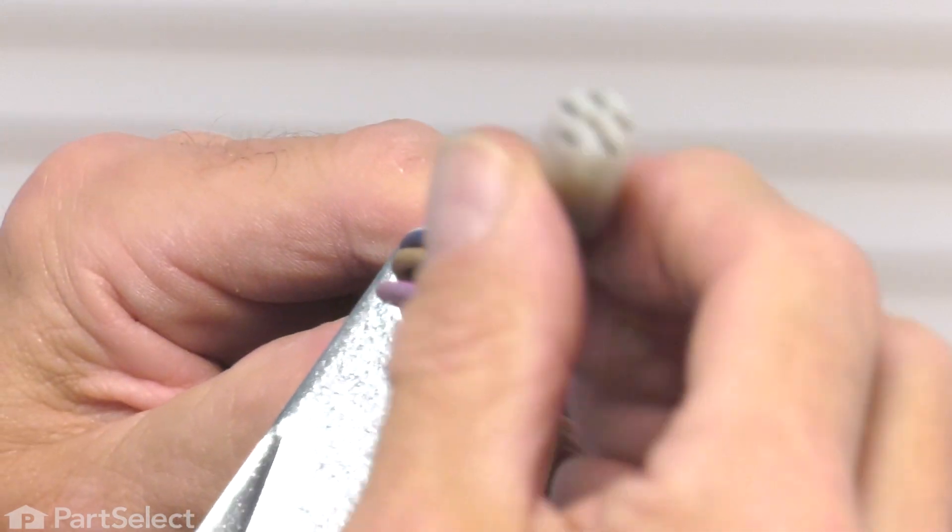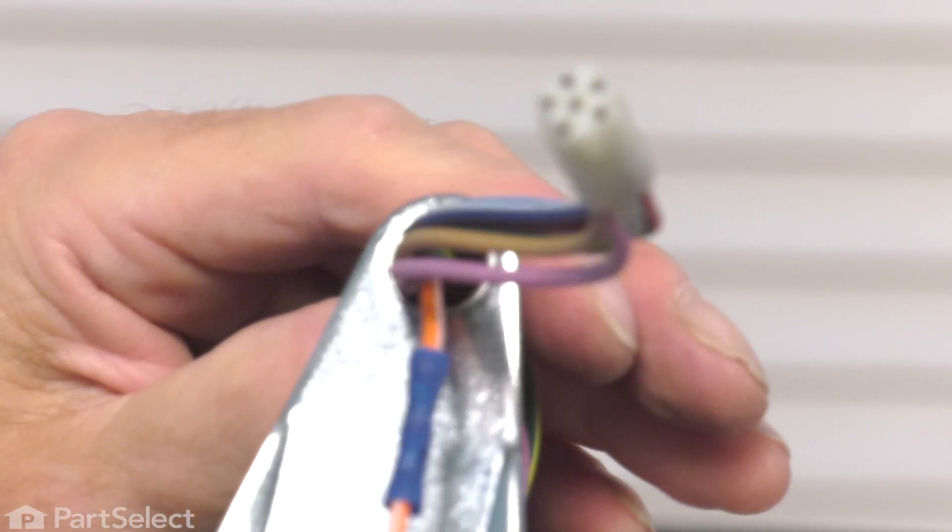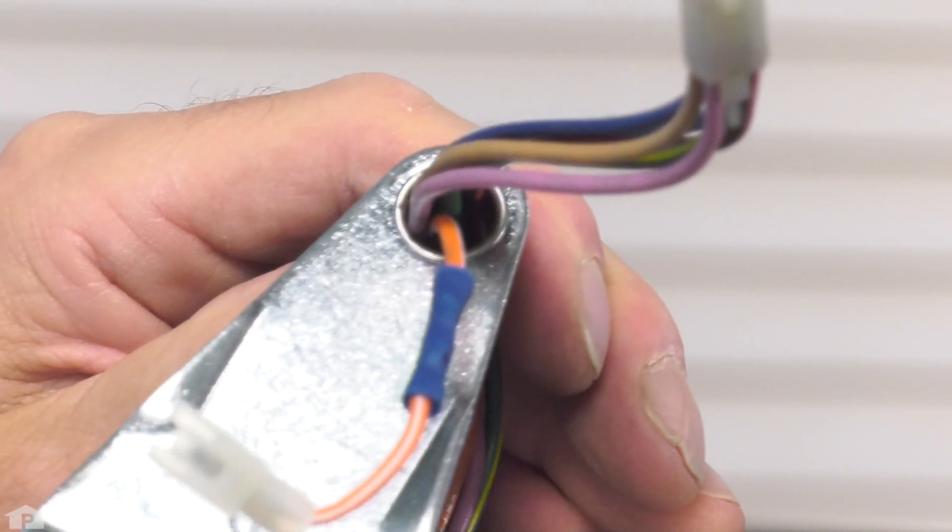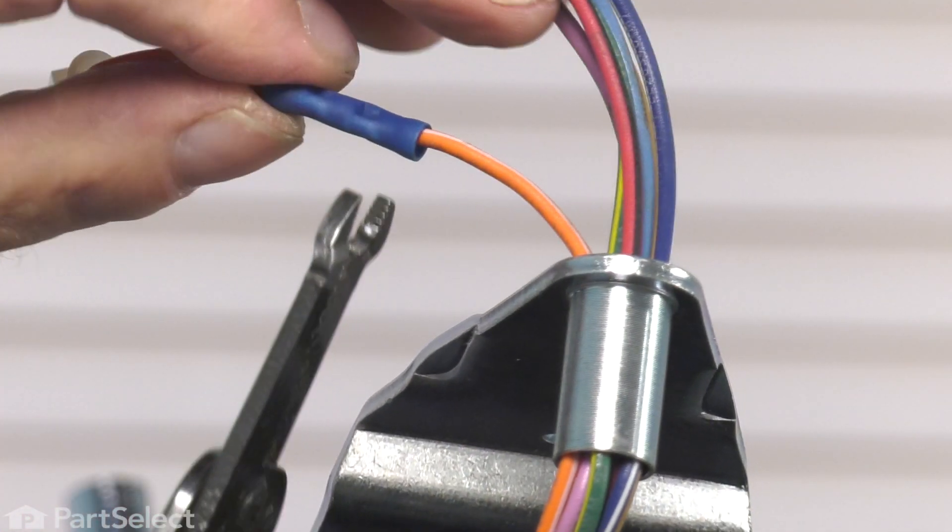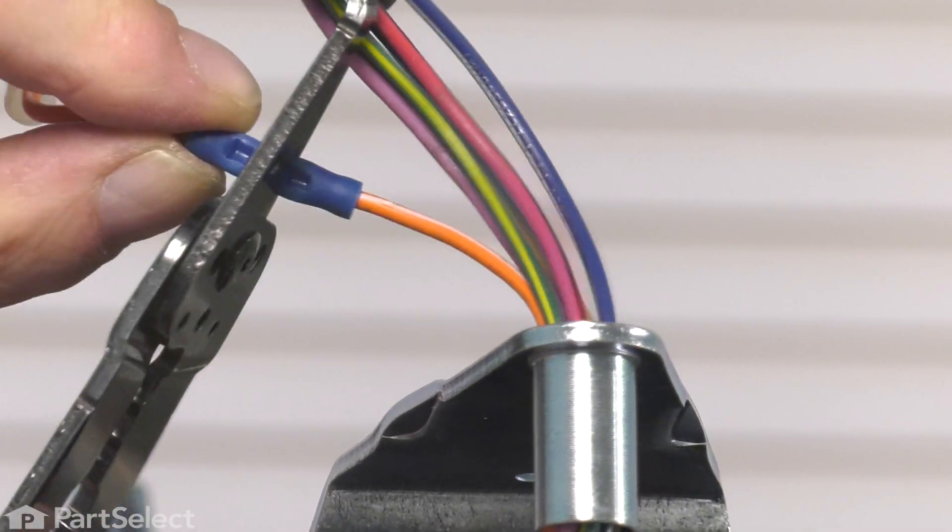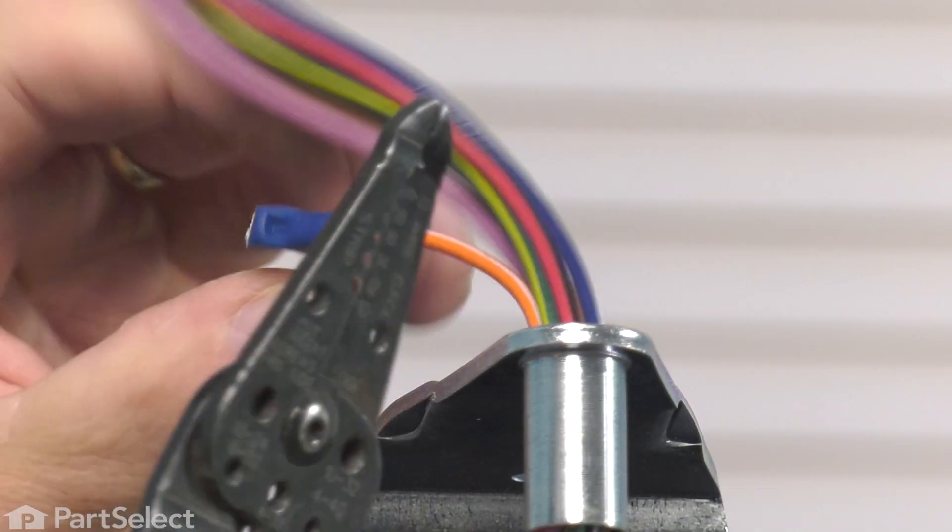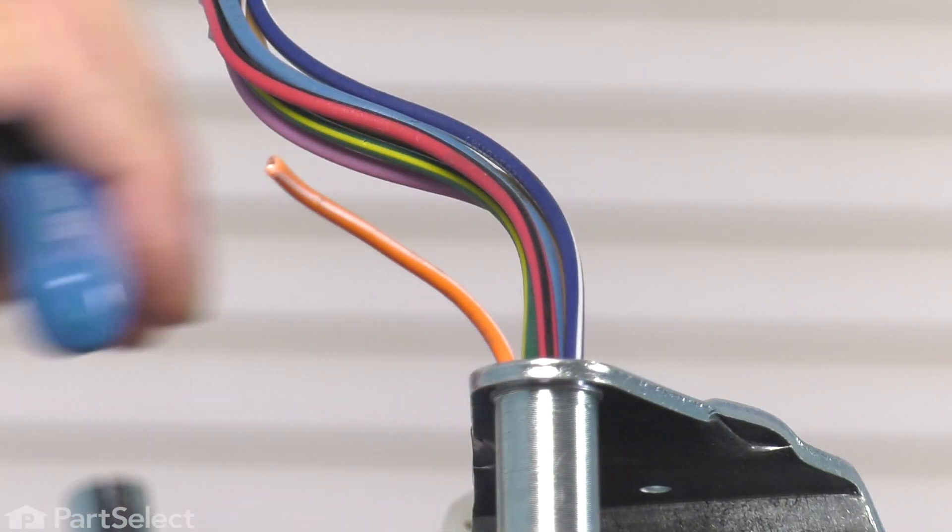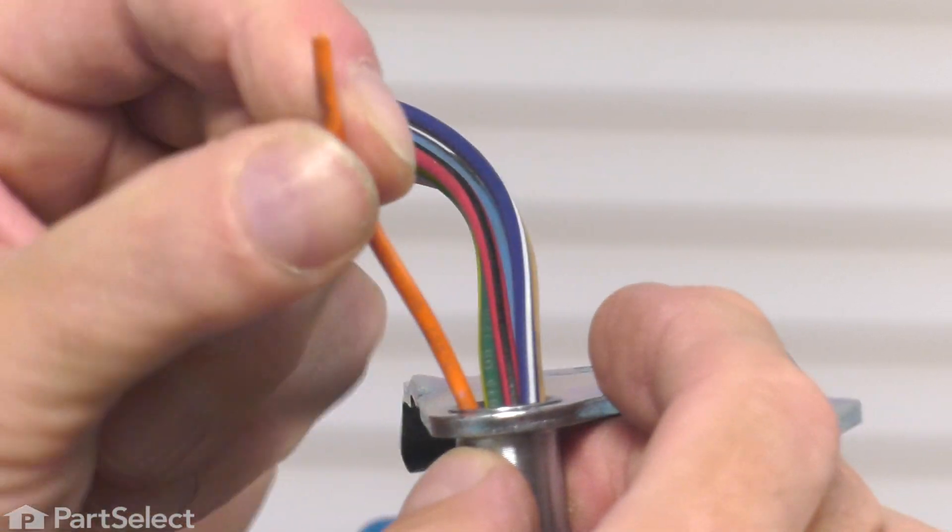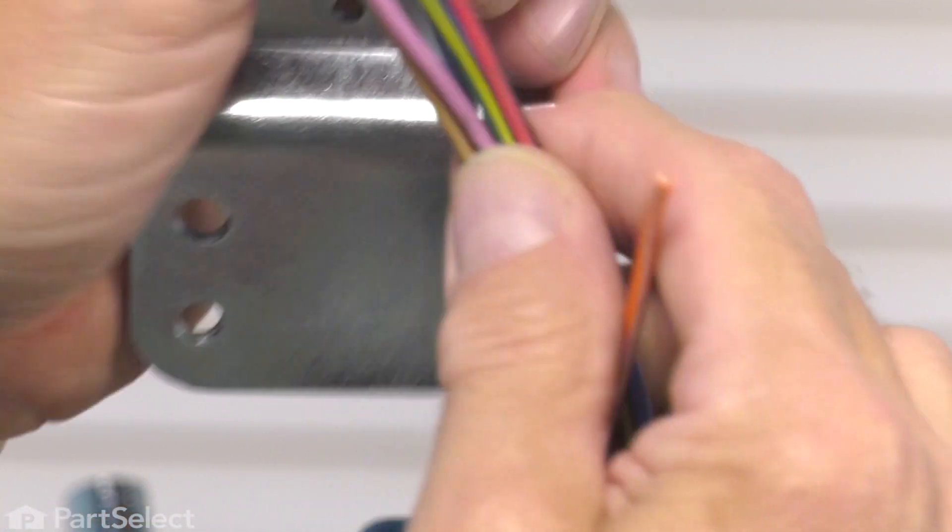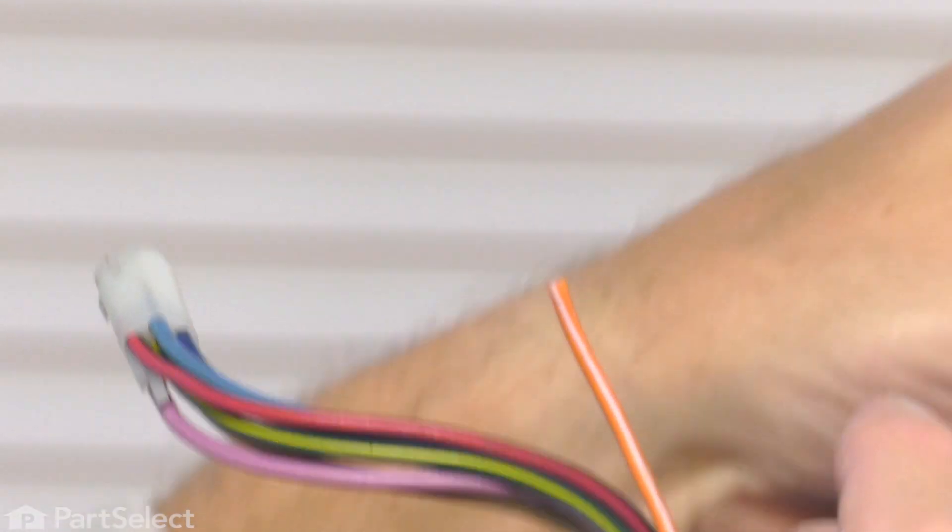You may find it very difficult to get that large harness down through that opening, and if so, we suggest that you cut that single wire and then splice it back together afterwards. Make sure you leave lots of length of wire there that we can reconnect. Pull the single one through, and then you won't have any problem pulling that larger one through. We'll set the hinge aside.